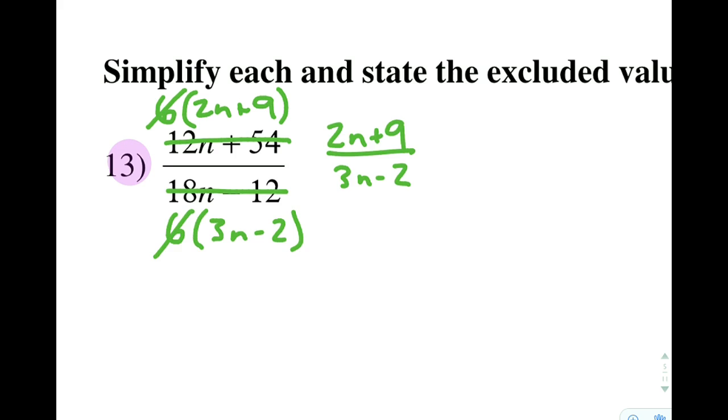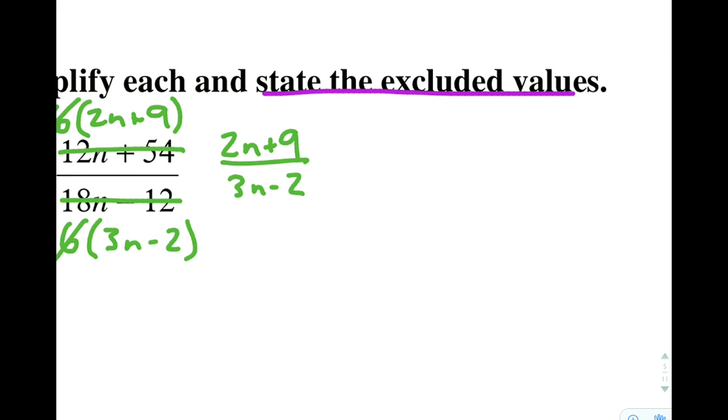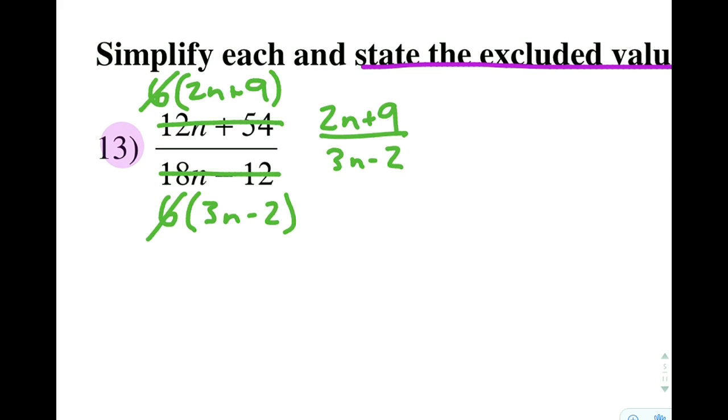The other thing we are asked to do is state the excluded values. Now the excluded values is something that comes from your factored form in your original equation. So this very first step we did here, where we factored it fully but before we cross anything out, is the part where we are going to look to for finding the excluded values.